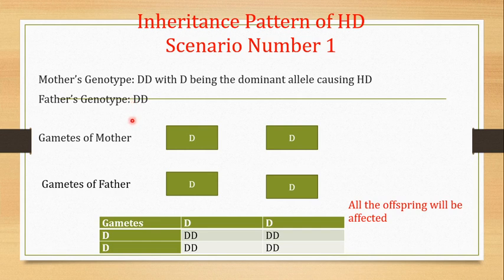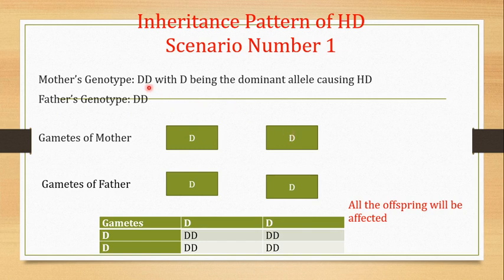The first thing you have to do is make the gametes. During gamete formation, the members of a pair get separated from each other — following Mendel's law of segregation. So if the mother is capital D and capital D, the gametes of the mother will all carry capital D. There is only one kind of gamete because all gametes this mother produces will be identical. Similarly for the father, capital D and capital D, so all his gametes will also be capital D.